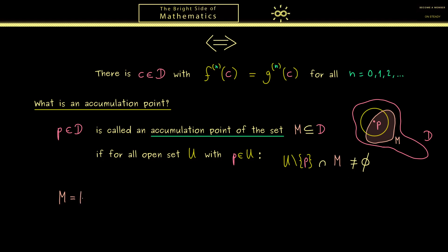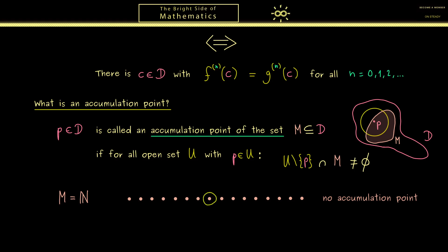For the first example, I want M to be the natural numbers. In the complex plane this looks like a chain of points. We immediately recognize that this set has no accumulation point in the complex numbers. For example, any point here can't be an accumulation point of the set M, because if we choose a small enough epsilon ball and remove the point p from the ball, then nothing remains of the set M. This argumentation works for every point in the complex plane, because you just have to choose the epsilon ball small enough.